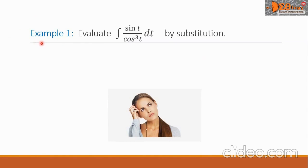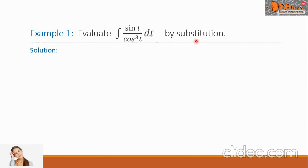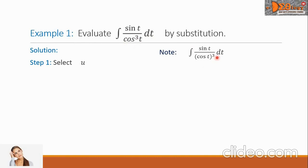Example 1: evaluate the integral of sin t over cosine cubed of t, dt, by substitution. For our solution, step 1 is to select u. Cosine cubed of t is the same as cosine t, quantity cubed. Let us choose cosine t as u, and take the derivative: du equals negative sin t dt.